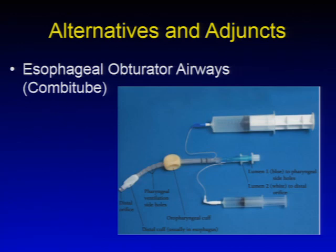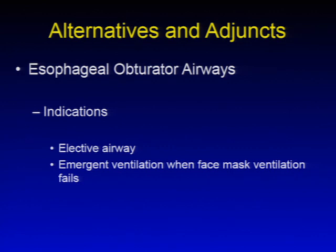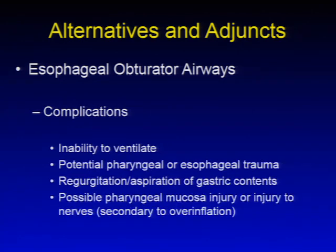The esophageal obturator airway — a combitube is an example. Types include the combitube in regular and small adult sizes but no pediatric size; King LT and LTS, which have pediatric through adult sizes. Both are pharyngeal and esophageal cuffed devices. Indications include elective airway and emergent ventilation when face mask ventilation fails. Contraindications include inaccessibility of the oral cavity, full stomach or aspiration risk except in emergencies, and severe supraglottic obstruction. Complications include inability to ventilate, pharyngeal or esophageal trauma, regurgitation/aspiration, or nerve injury from overinflation.